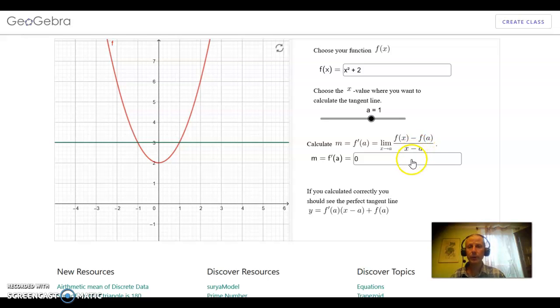So calculate that on your own, and then you can try and input the answer. And this will calculate the line which goes through (a, f(a)) with this particular slope.